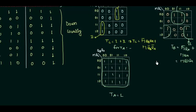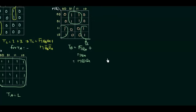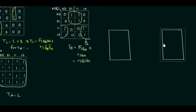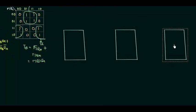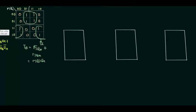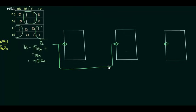Now we implement the circuit. We require three T flip-flops: flip-flop A, flip-flop B, and flip-flop C. We give a common clock to all three flip-flops simultaneously — that is why we call this a synchronous counter. The clock is connected to all three flip-flops at the same time.